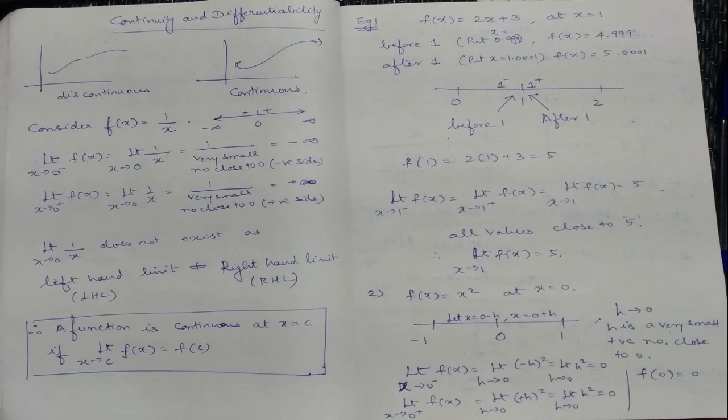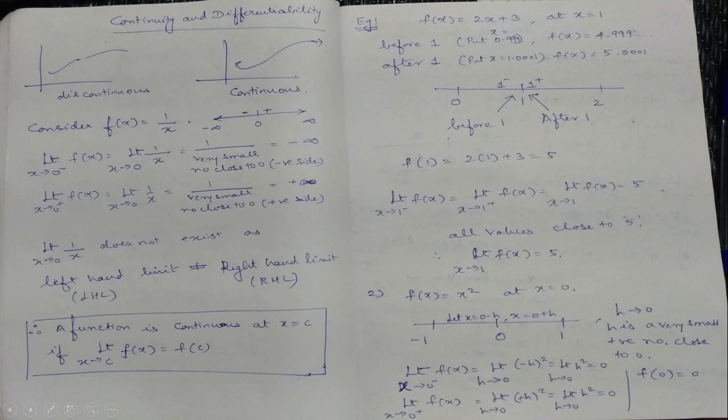Please understand the difference. When do we say a limit exists? The limit exists only when the left-hand limit equals the right-hand limit. If left-hand limit is not equal to right-hand limit, the limit does not exist. But for the function to be continuous, left-hand limit should equal right-hand limit, which should equal the value at that point. In this continuous graph, all three are the same. From this discussion we understand the definition of continuity.